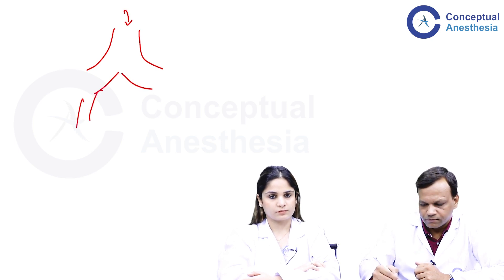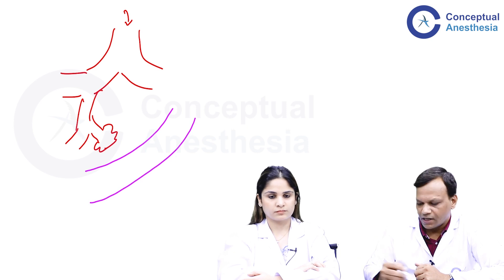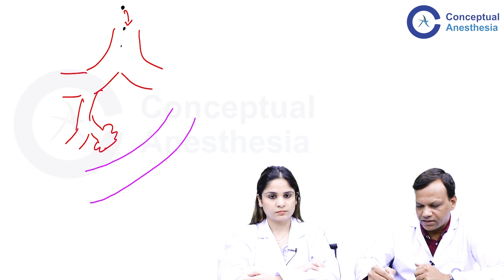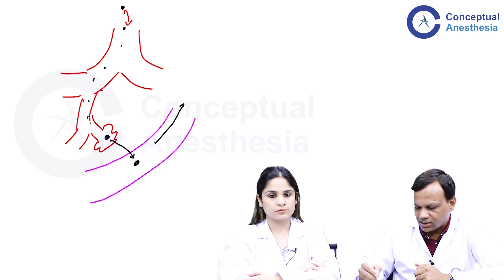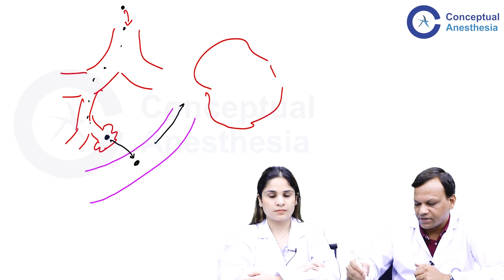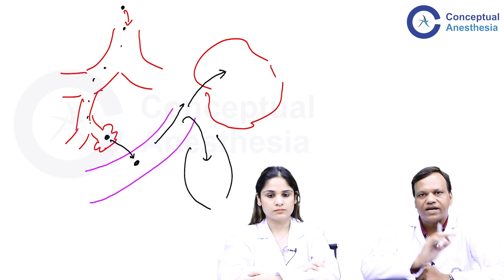The respiratory pathway goes from trachea to bronchi to bronchioles, which end in alveoli where gas exchange occurs. When we give an inhalational anesthetic, it travels from the trachea through the bronchi and bronchioles to reach the alveoli. From the alveoli it diffuses into the blood, and from the blood it reaches the brain where we want it to act and produce anesthesia. It can also enter other organs like muscle, adipose tissue, and liver.